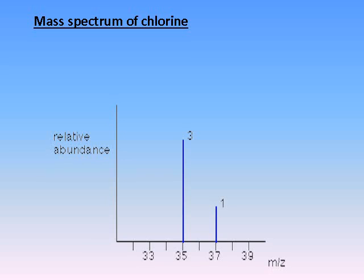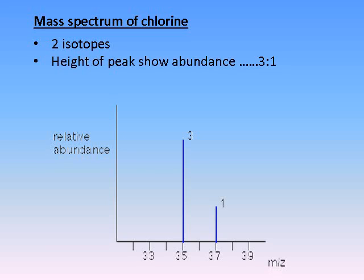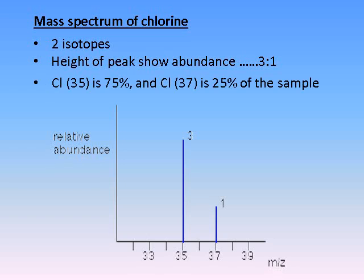This is what you would see if you wanted to get a mass spectrum of chlorine. In the mass spectrum, it shows the isotopes of the element. The number of peaks indicates the number of isotopes — in this case two. The position of each peak on the horizontal axis indicates the relative isotopic mass, and the relative heights of the peaks correspond to the relative abundance of the isotopes. For chlorine, one peak is approximately three times the height of the other, so the isotopes are present in the ratio of three to one.